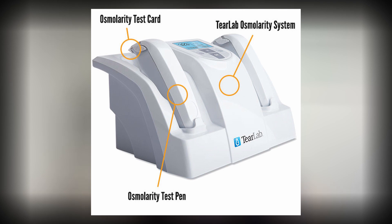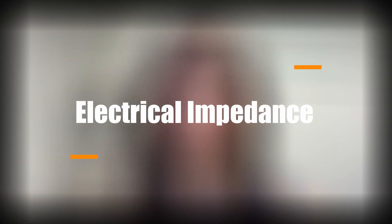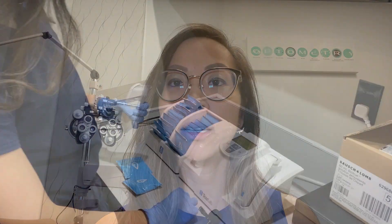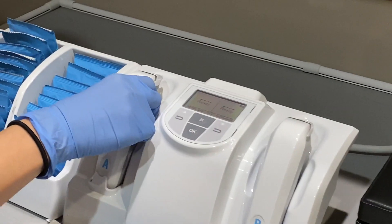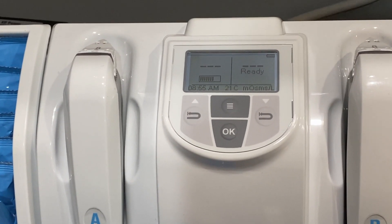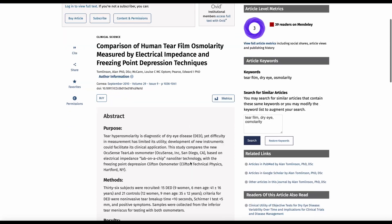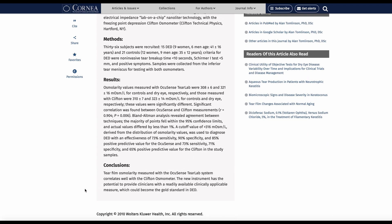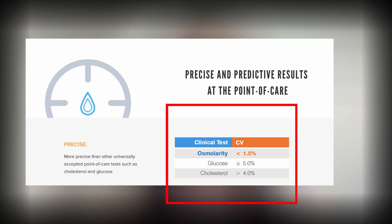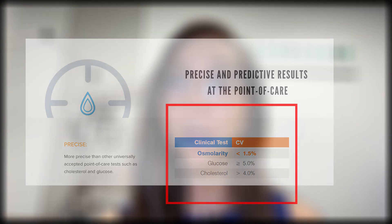The TearLab uses a handheld sampler with a single-use microchip embedded with gold electrodes that measures the electrical impedance of the tear fluid sample in a tiny channel in the chip. To perform the test, the clinician collects a very small sample of tear fluid — the patient is asked to look up and the tip of the device is positioned along the lower lid closest to the ear. The tear meniscus is absorbed by capillary action, and the device is then docked into the reader, which calculates and displays the osmolarity measurement in just a few seconds. A recent paper compared the TearLab Osmometer against the freezing point depression method — the industry gold standard — and determined that the TearLab method correlated well with it.